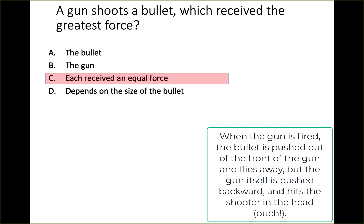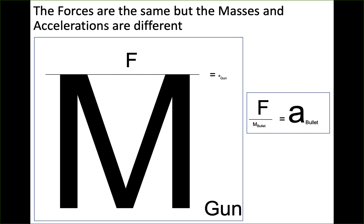The bullet accelerates very rapidly and travels a long distance, whereas the gun does accelerate back toward the shooter but nowhere near as much as the bullet. How does that work if they both receive equal force? Again, we look at the masses: the bullet has a very low mass compared to the gun. Because the gun's mass is much higher, the same force leads to a much smaller acceleration. Same force, very different masses — very different accelerations.